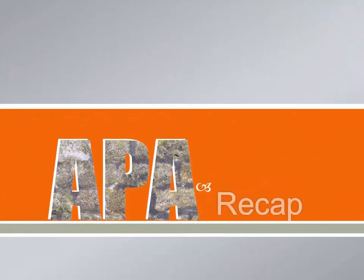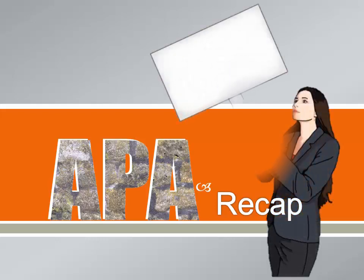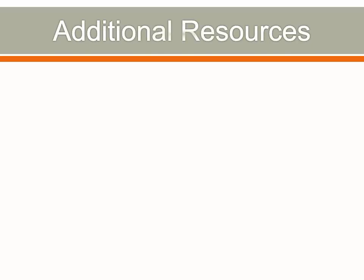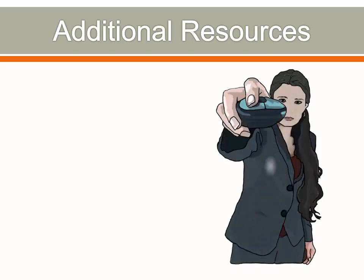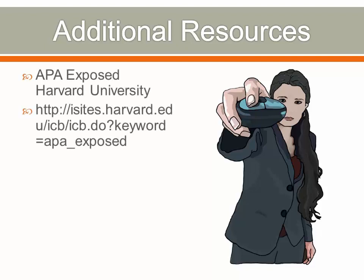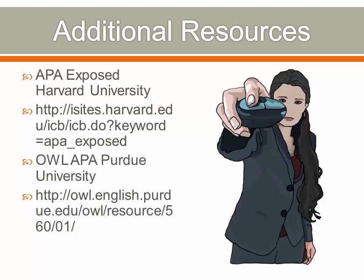To recap, this presentation provided an overview of the basics of APA 6th edition, including document structure, mechanics, citations, references, and fair use. However, this is not an all-inclusive reference, but rather a quick-start help for students new to APA. Keep in mind that APA is periodically updated as new formats for information are made available. Two excellent websites for writing in APA are APA Exposed, supported by Harvard University, and OWL APA by Purdue University.